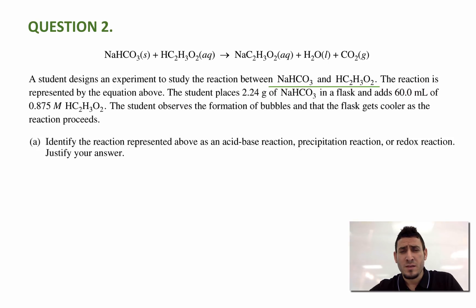The student places 2.24 grams of sodium hydrogen carbonate in a flask and adds 60.0 milliliters of 0.875 molar acetic acid. The student observes the formation of bubbles and that the flask gets cooler as the reaction proceeds.